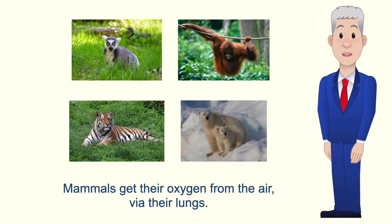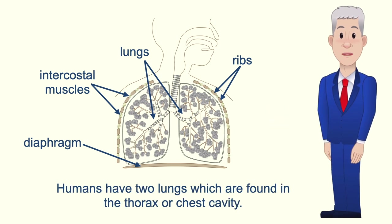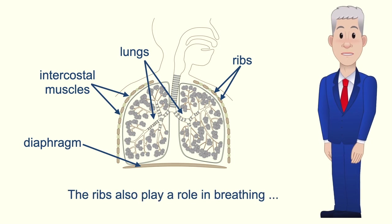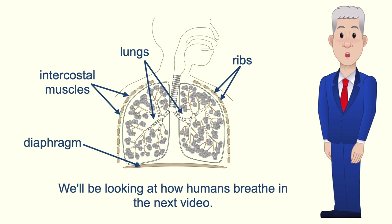Mammals get their oxygen from the air via their lungs. Humans have two lungs which are found in the thorax or chest cavity. The lungs are protected by the ribs, which also play a role in breathing along with the intercostal muscles and the diaphragm. We'll be looking at how humans breathe in the next video.